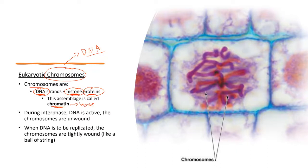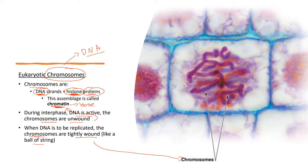During interphase, the DNA is active, and the chromosomes are usually unwound — they're usually found as chromatin. When DNA is to be replicated, the chromosomes are going to be tightly wound, like a ball of string. That's what we refer to as a chromosome. But again, technically chromosomes and chromatin are pretty much the same thing — a chromosome is just a more condensed, more tightly wound form of DNA chromatin.